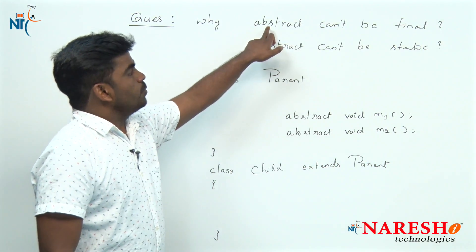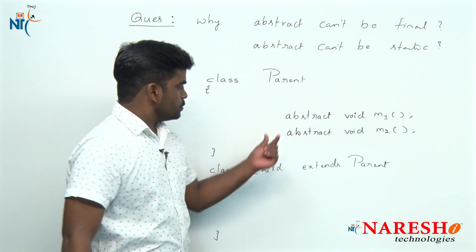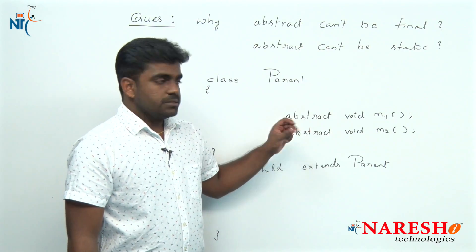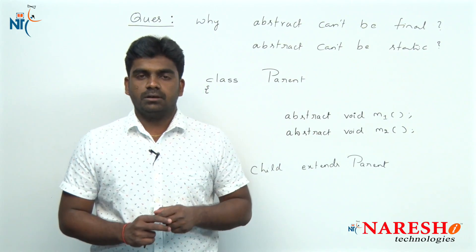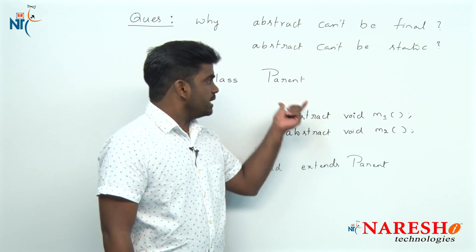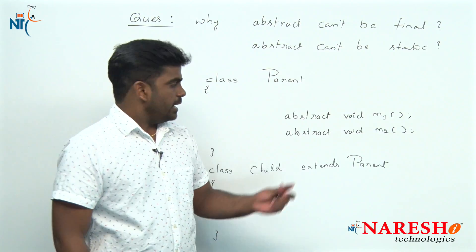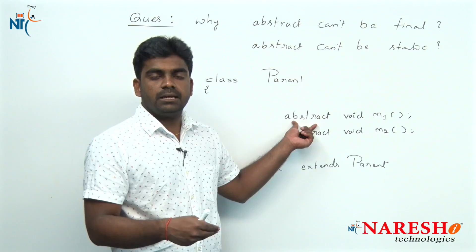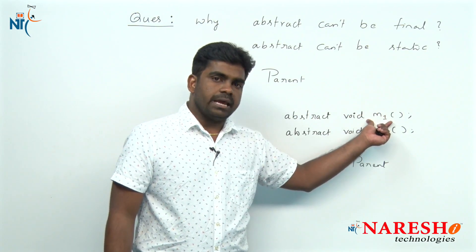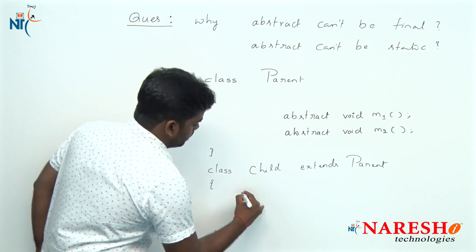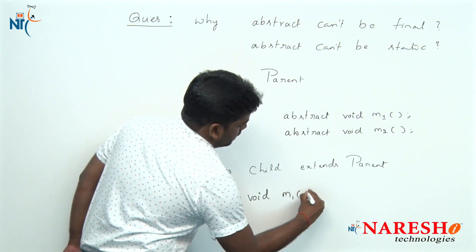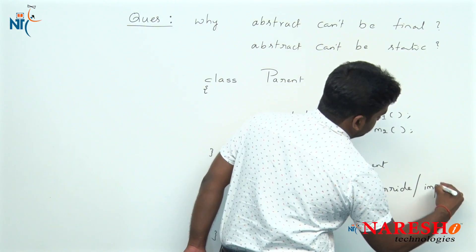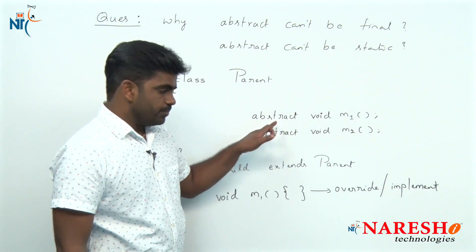First: why abstract cannot be final. The rule of an abstract method is that if there is a specification — meaning just a declaration with no definition — in the parent class, you have to implement it in the child class. Implementation means providing the body, which is more technically called overriding. So we override m1 in the child class — this is called overriding or implementing, providing the definition.